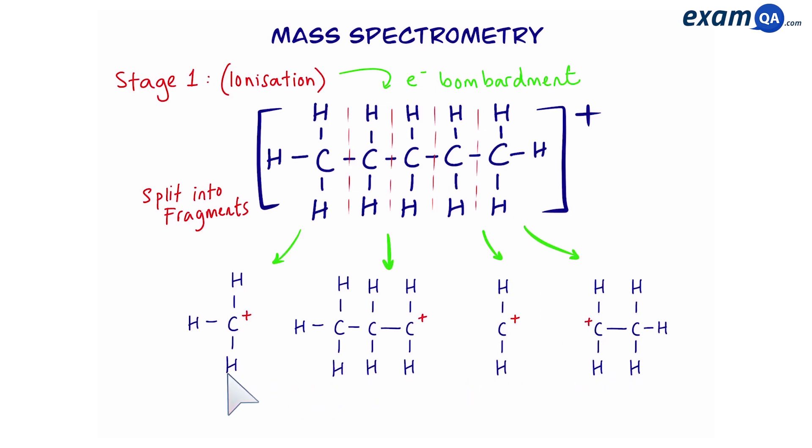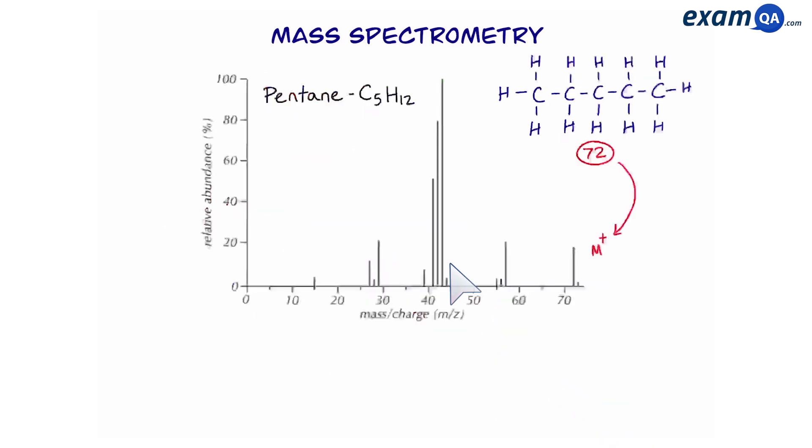Now, these fragments, because they have a different number of atoms, will also have different Mz values. As you can see, for this sample, we have loads of different fragments, and there are more variations. However, we're just going to look at the most common ones. Let's have a look at how these fragments look like on our graph.